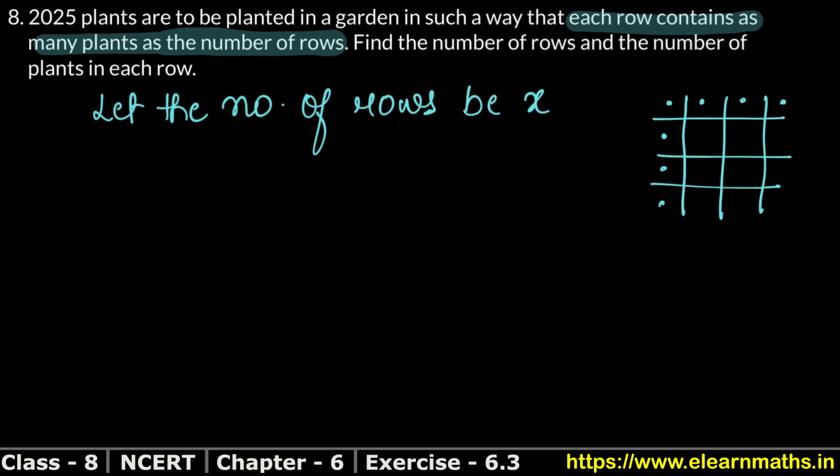Let the number of rows be x. Each row contains as many as the number of rows. The number of plants placed in each row is x into x. How many plants to plant? The power of both in multiply is added, so it will be x squared equals to 2025.